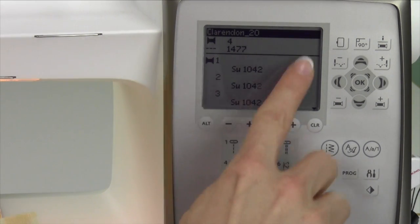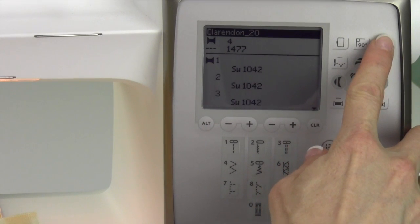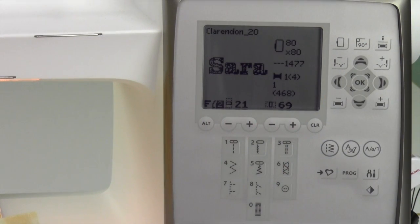Come back out of this area, touch that information button again, and you're back out to where your embroidery viewing screen is.